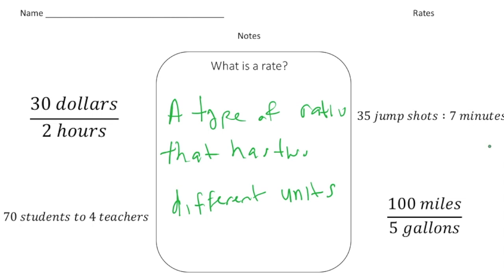So a type of ratio that has two different units. For example, here we have a rate. It's $30 and two hours. So the two different units would be dollars, let's underline that, and then also hours. If we have the ratio of 70 students to four teachers, well one unit is students and the other unit is teachers. 35 jump shots in seven minutes. Well jump shots that's one unit and the other unit is minutes. And then finally miles and gallons. Miles that's one unit and gallons is another unit. So a rate is basically a type of ratio that compares two different units.